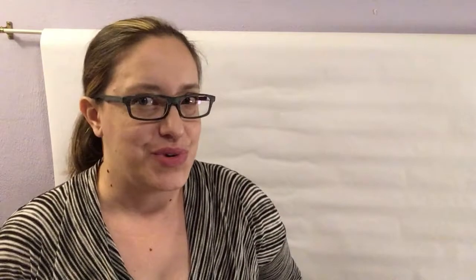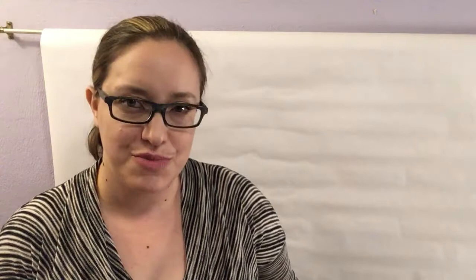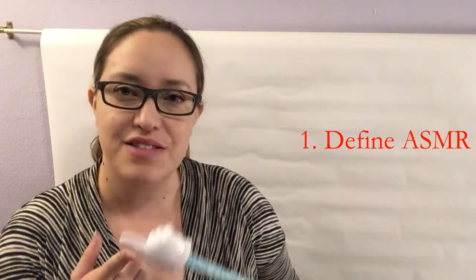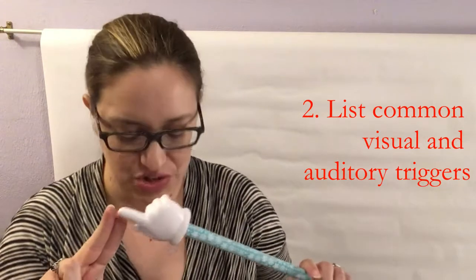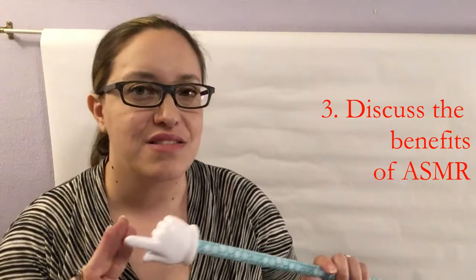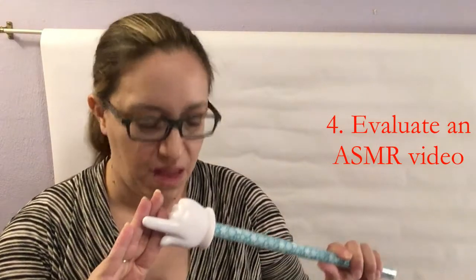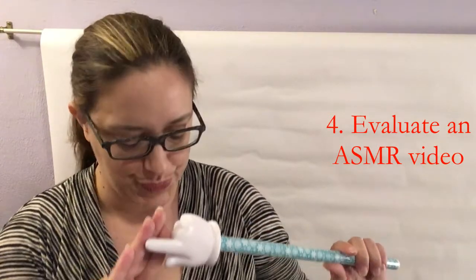Number one, design backwards. Start with your learning outcomes for your course. If they are measurable, then they will dictate your assessments. So, to illustrate these points I'm going to use a fictional ASMR video class. In this class, my learning objectives are: 1. Define ASMR, 2. List common visual and auditory triggers, 3. Discuss the benefits of ASMR, 4. Evaluate an ASMR video.